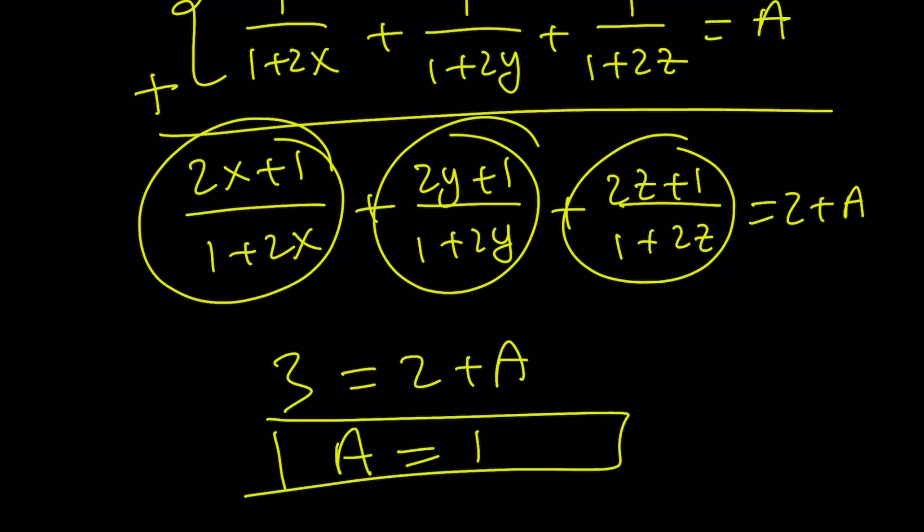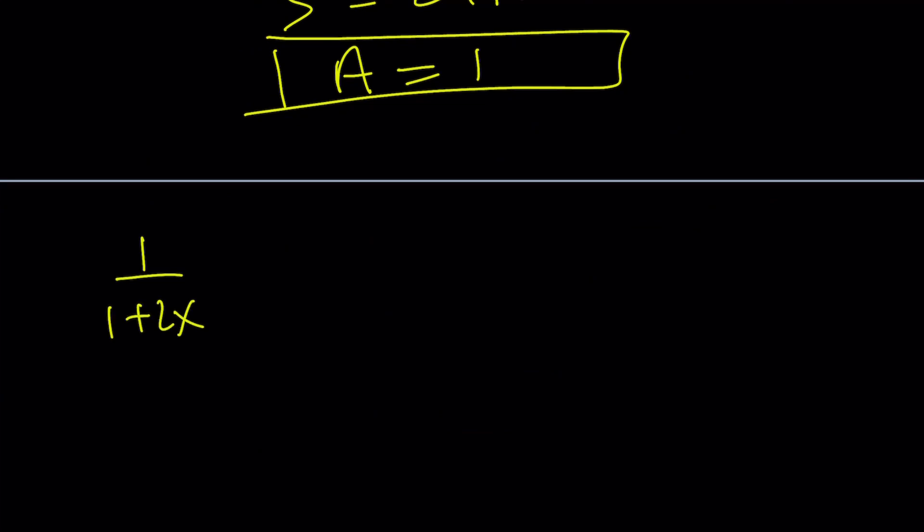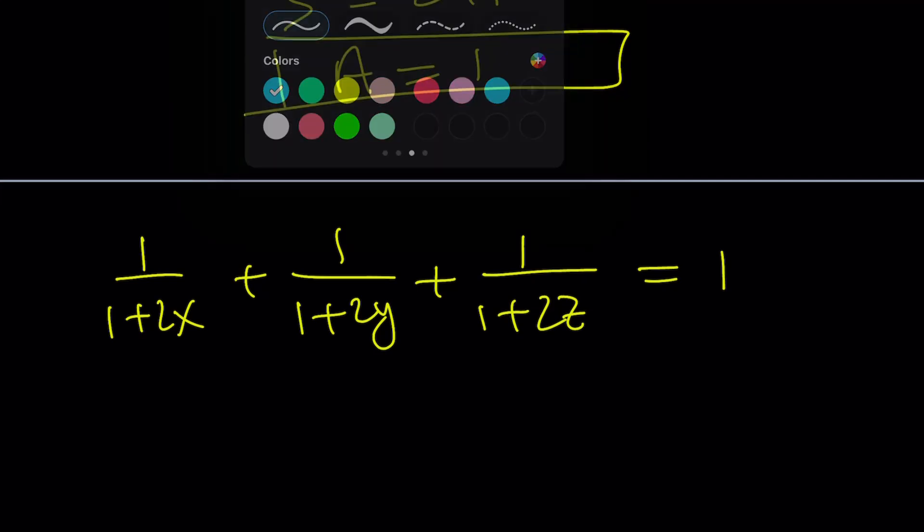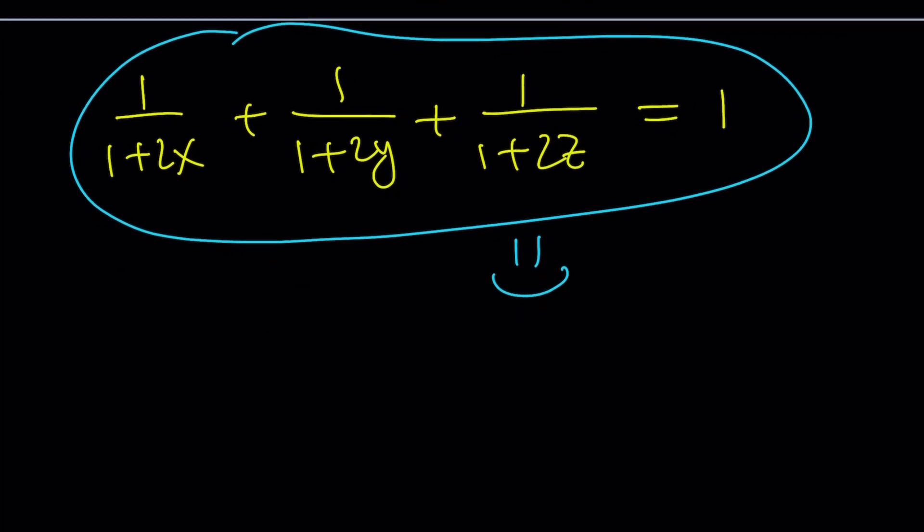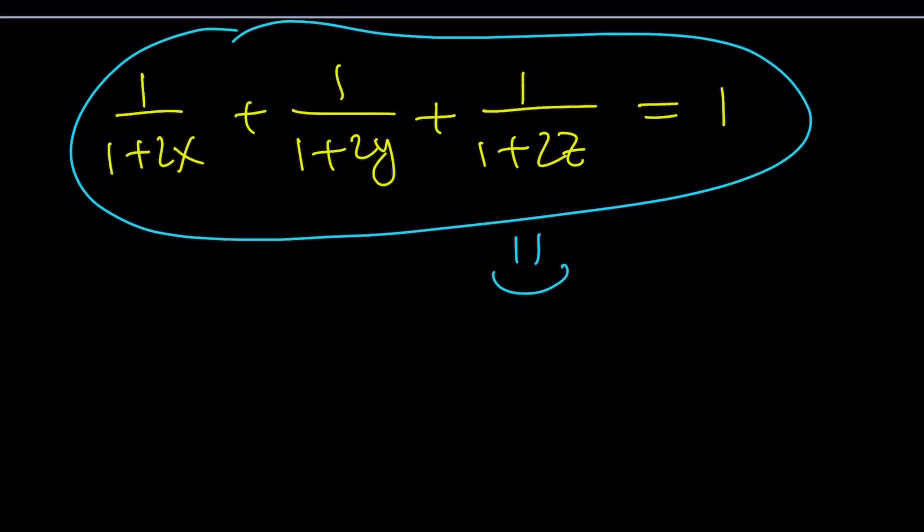But, what is A? A is 1 over 1 plus 2x plus 1 over 1 plus 2y plus 1 over 1 plus 2z. And, that is equal to 1 one more time. And, this brings us to the end of this video. Thank you for watching. I hope you enjoyed it. Please let me know. Don't forget to comment, like, and subscribe. I'll see you next time with another video. Until then, be safe. Take care. And, bye-bye.